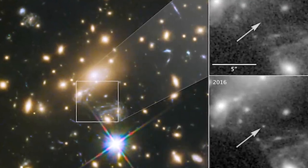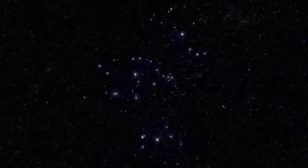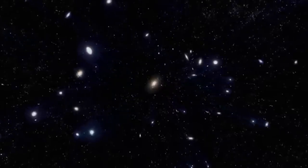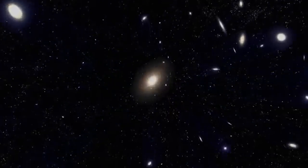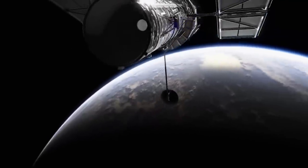Icarus is the name given to the most distant star ever observed. Much larger and brighter than our sun, it took 9 billion years for its light to reach the Earth. It appeared to us when the universe was at 30% of its age. The discovery was also made possible by the Hubble Space Telescope in 2018.